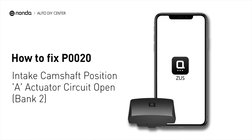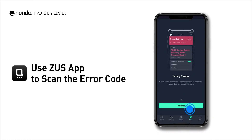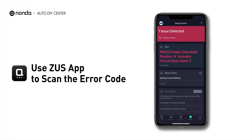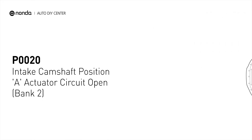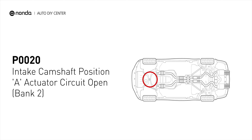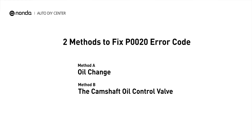If you are getting a P0020 error code, this video is going to show you two practical solutions to fix the error code at home. Use the Zeus app to scan your vehicle and see the error code P0020. It indicates that the ECM has determined that the bank two intake camshaft oil control valve has an open or short circuit. Here are two simple DIY methods you can try to solve this problem.